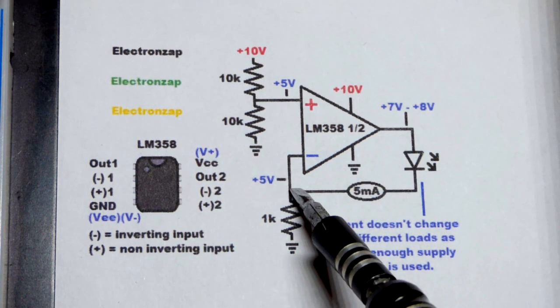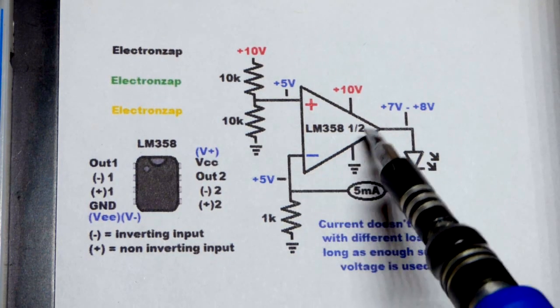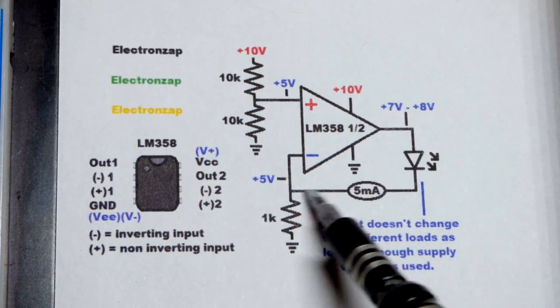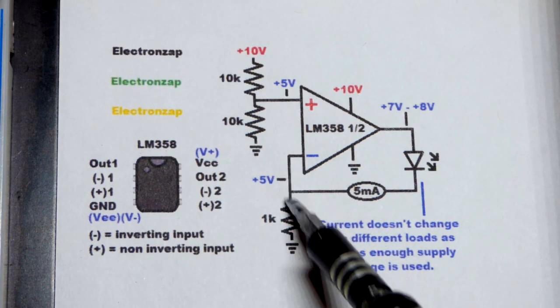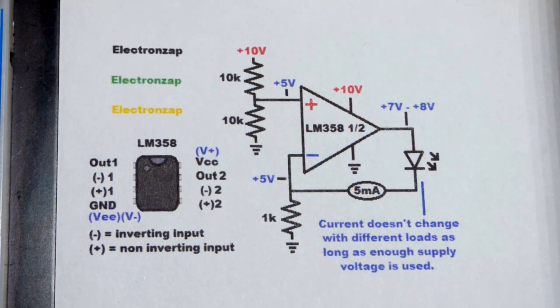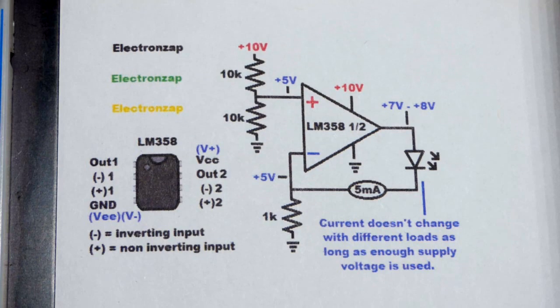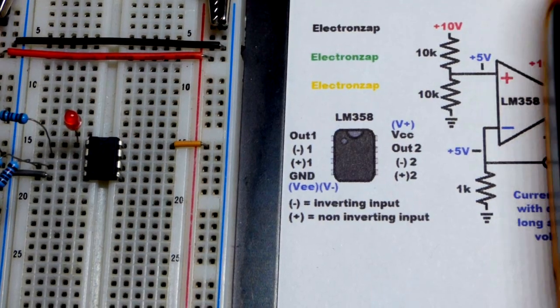Now we can get rid of the LED, just connect the output directly to the inverting input. We'll just have five volts coming out of there and still five volts across the resistor. It'll be the same amount of current, even as the load changes, as long as there's enough supply voltage and the output can handle it. So here we are on the board.